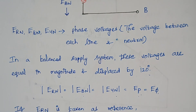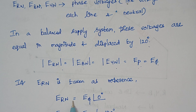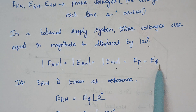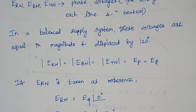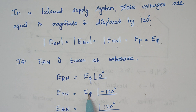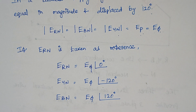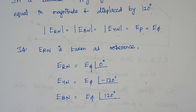Taking E-R-N as reference: E-R-N equals E-φ at an angle of 0 degrees. E-Y-N equals E-φ at minus 120 degrees, and E-B-N equals E-φ at plus 120 degrees. You can also write it as minus 240 degrees — both hold the same meaning.